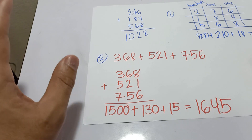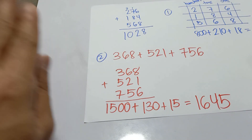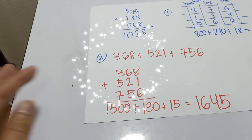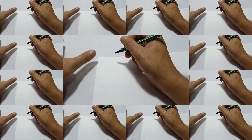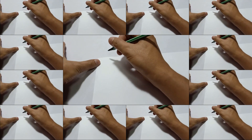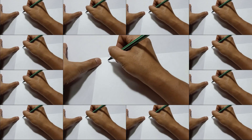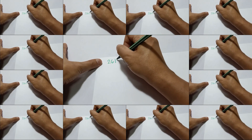We don't use carry-over — we just add from left to right. Let's take another example for addition of numbers the easiest way. Let's say we have 2615.